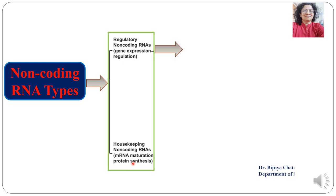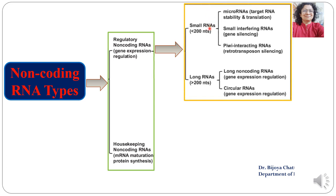The regulatory non-coding RNAs are further classified into small RNAs, which have less than 200 nucleotides. These include microRNA, which target stability and translation; small interfering RNA (siRNA), which play a role in gene silencing; and Piwi-interacting RNA (piRNA), which are also involved in gene silencing, specifically targeting retrotransposons. The other category of regulatory non-coding RNAs are long RNAs, which have more than 200 nucleotides, and include long non-coding RNAs and circular RNAs — both involved in regulation of gene expression.